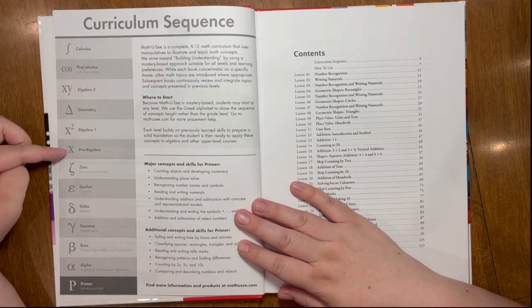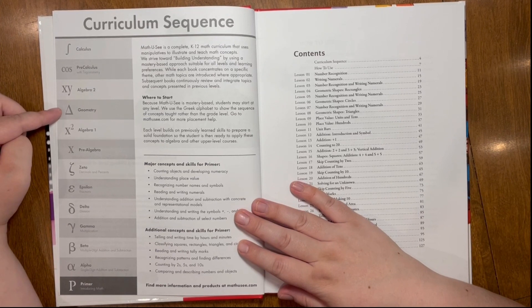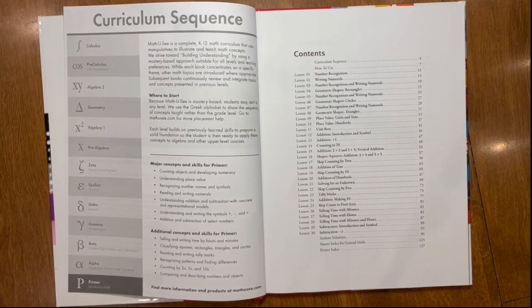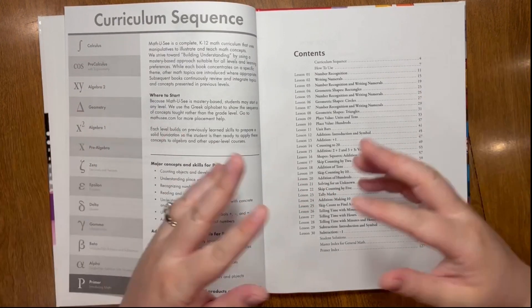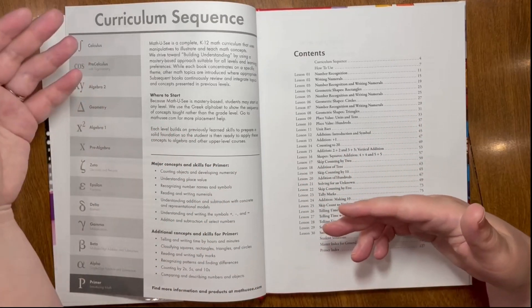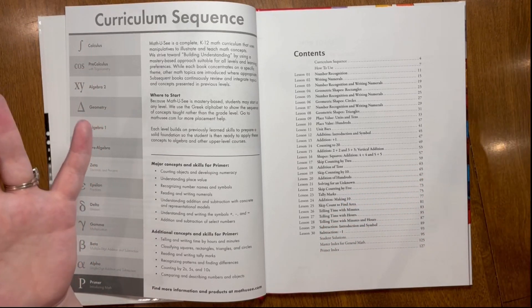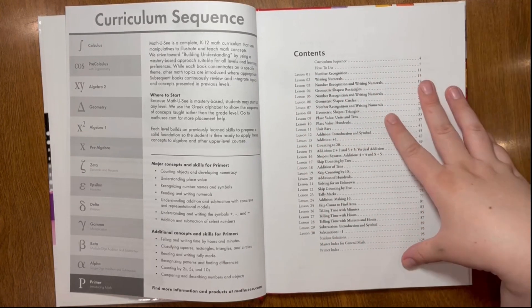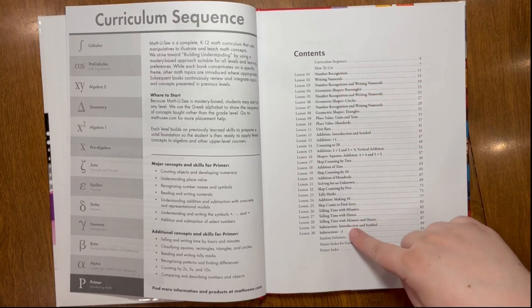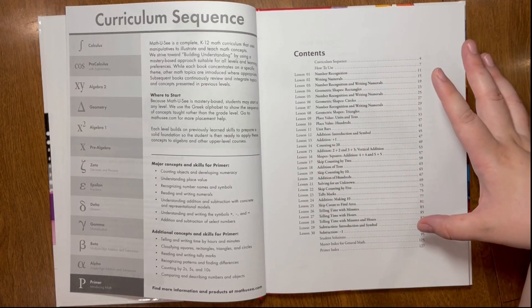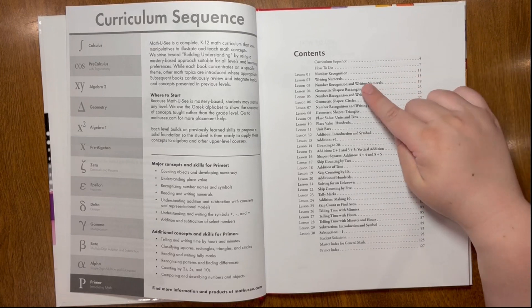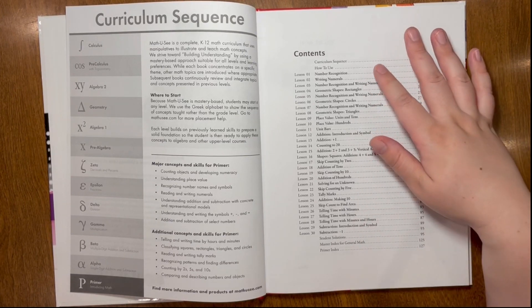And then it continues on with pre-algebra, algebra, geometry, algebra two, pre-calculus, and calculus. I've mentioned this before, but that is one of the reasons why we really liked this curriculum was because it goes all the way through and could be something that we could stick with for the foreseeable future. On this side, we have our table of contents. In Math-U-See there are 30 lessons for each of their levels. And that lesson is broken down into different pieces. But these are essentially the 30 lessons that are included.